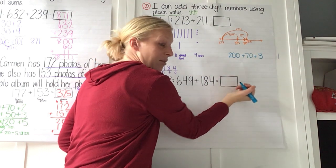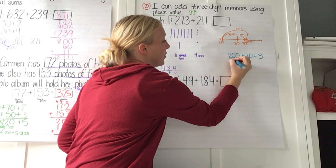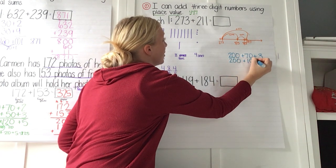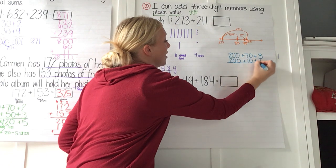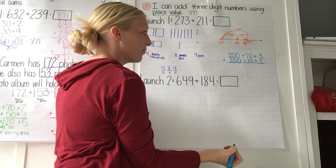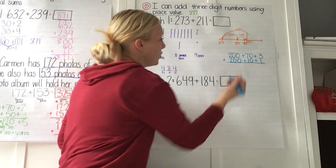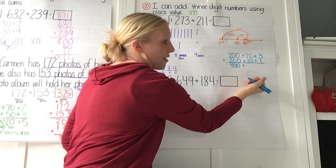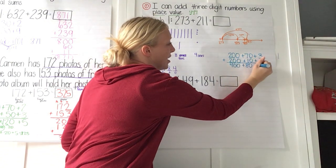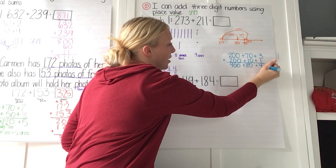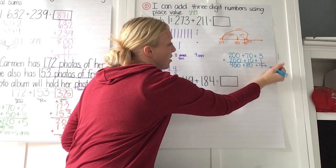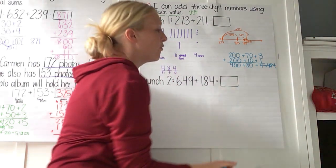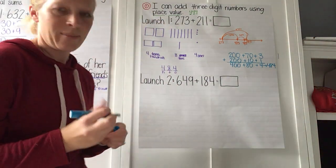For partial sums, you decomposed 273 into 270 and 3. Then you decomposed 211 into 200, 10, and 1. You knew 200 and 200 is 400, 70 and 10 is 80, and 3 and 1 is 4. And that's 484.